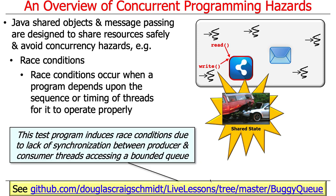If you want to see a fun example of a buggy program with race conditions, try running the buggy queue program in my GitHub account. It shows what happens when producer and consumer threads share a queue with no synchronization — as you might expect, chaos and insanity ensue, and it's a great teaching guide for what not to do.